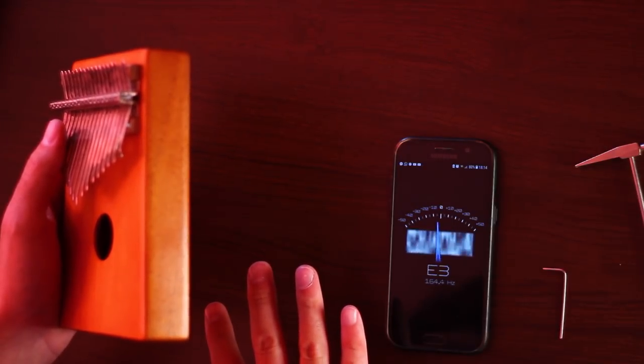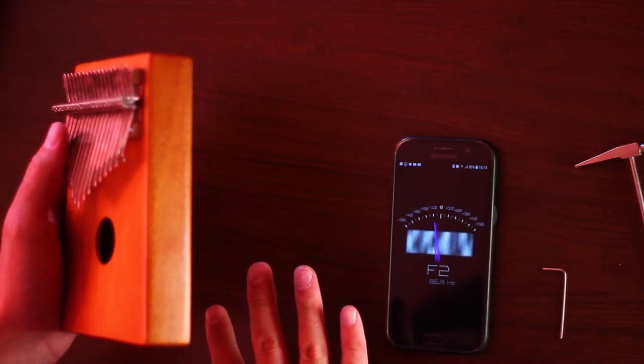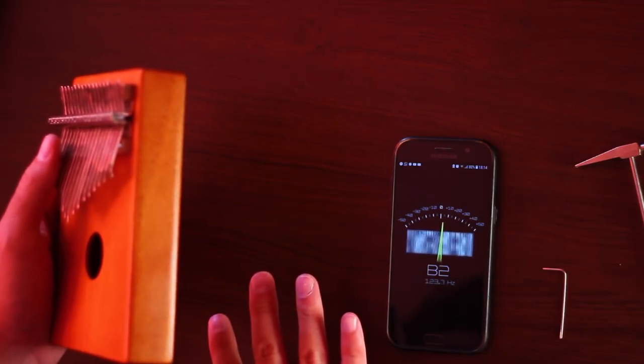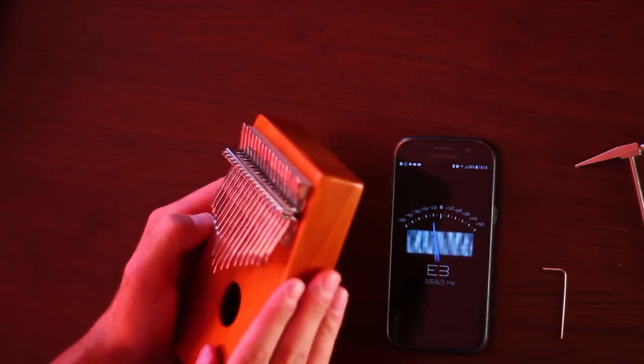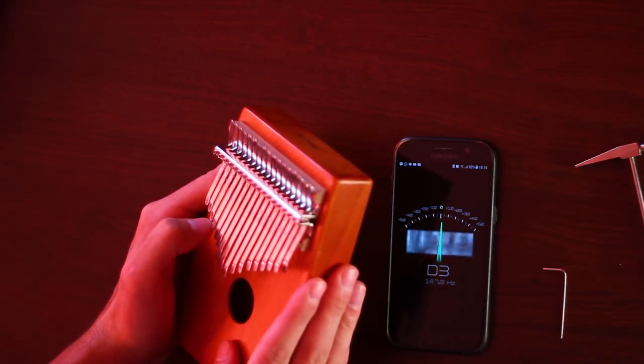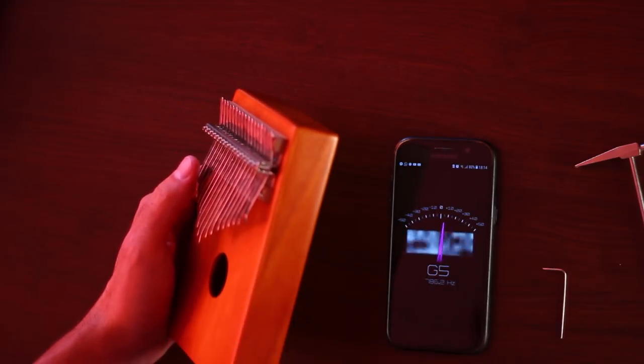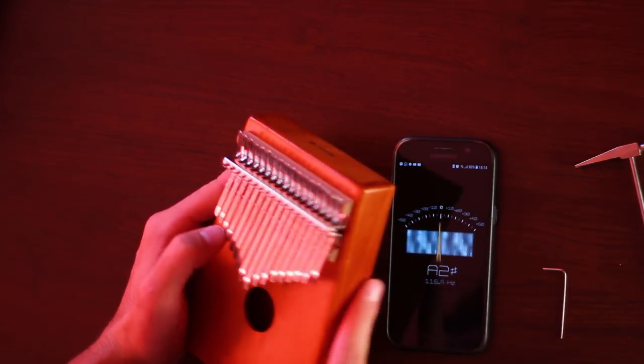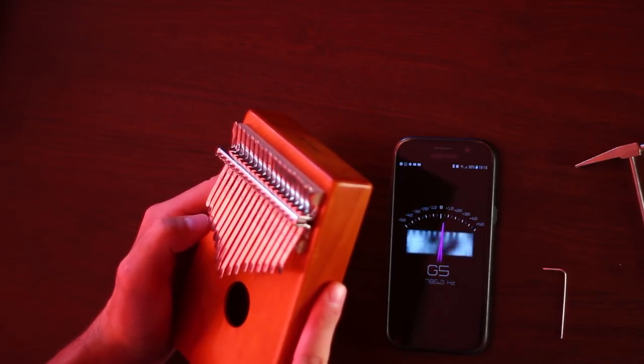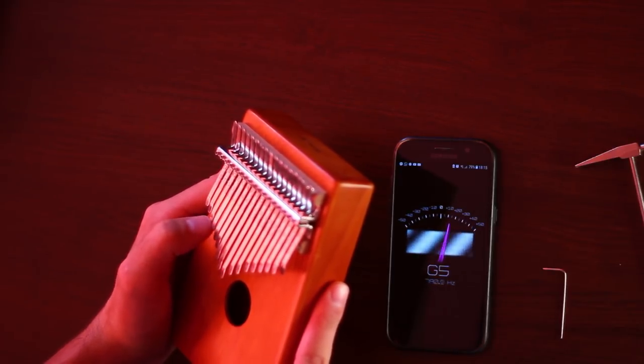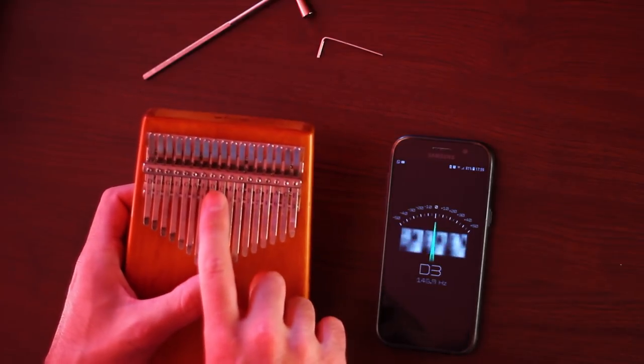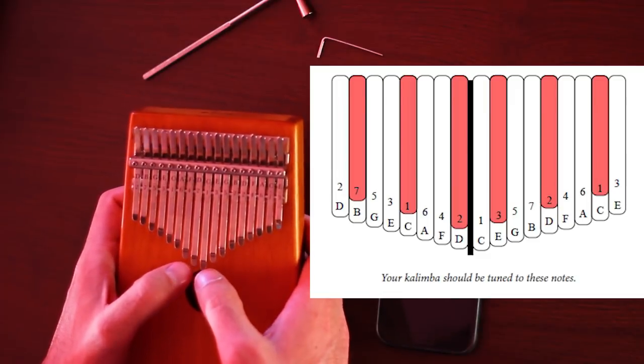And something about using a chromatic app like this one is that even if I'm silent, it is hearing some noises. So you need to be sure that you're plucking right next to the microphone and that you're quiet during this thing, because if I'm talking, I'm louder than the kalimba sometimes.